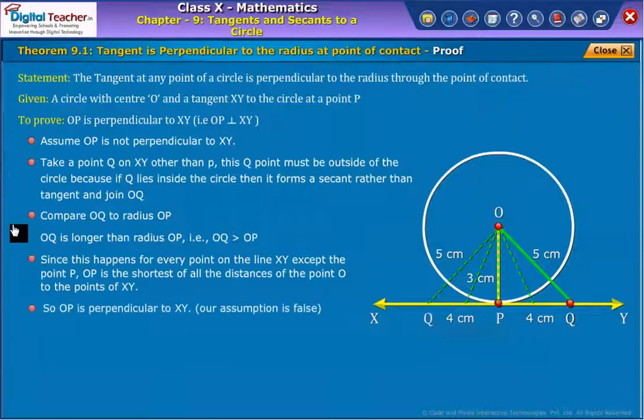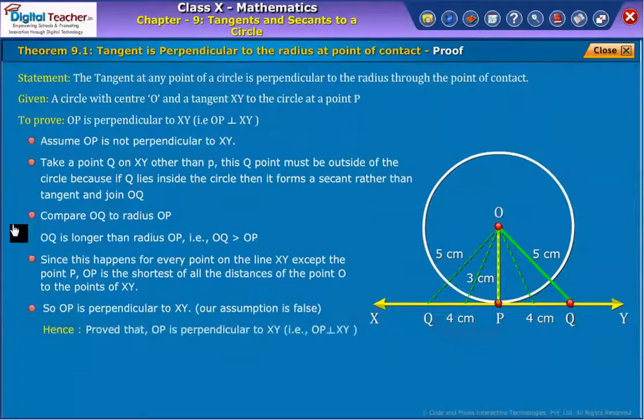So, OP is perpendicular to XY. Our assumption is false. Hence, proved that OP is perpendicular to XY.